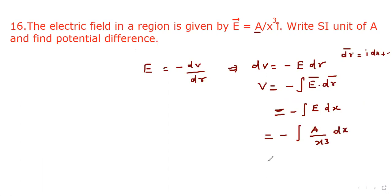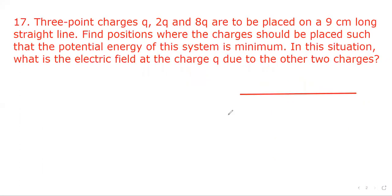Putting the values, it becomes minus integration of a upon x cube dx. The integration gives a upon 2x squared, which is our answer.